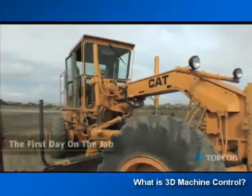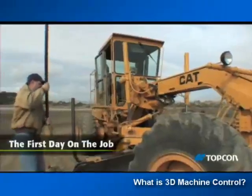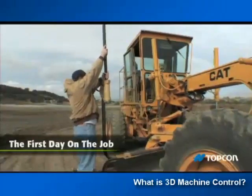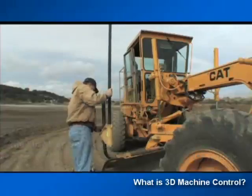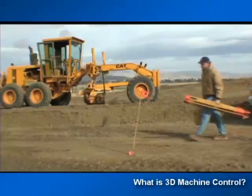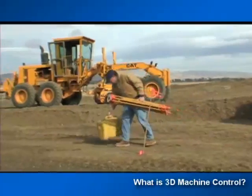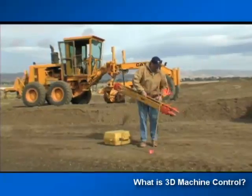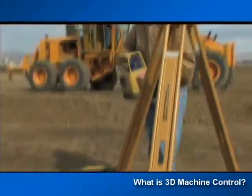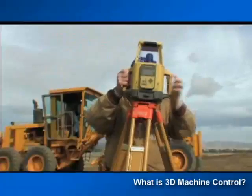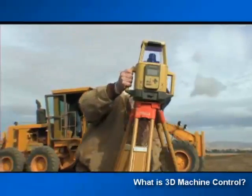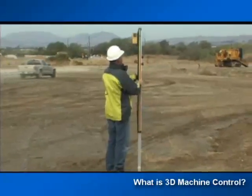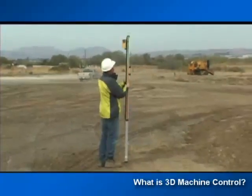It's the first day on the job site, and this gives us a chance to see how using GPS is much like using lasers, but with some key advantages. You've probably been using lasers on your jobs for years. When you start a project and want to use your laser to control the grade, you set up the tripod, put the laser on it, put your laser sensor on the grade rod, and bench in from a control point.